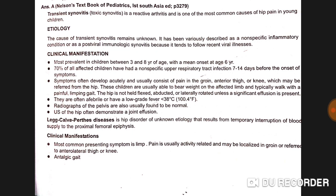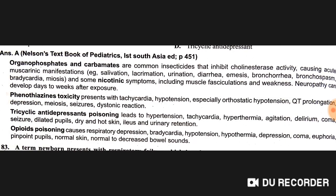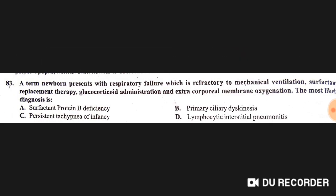A child presents with history of ingestion of an unknown substance. On examination, the child has excess salivation, lacrimation, miosis, gastrointestinal cramps, and emesis. The most likely substance ingested is carbamates or organophosphates.